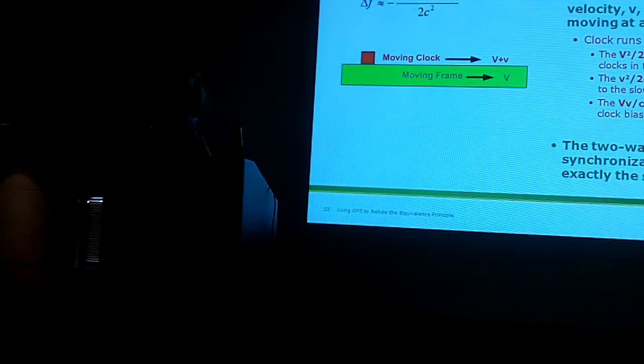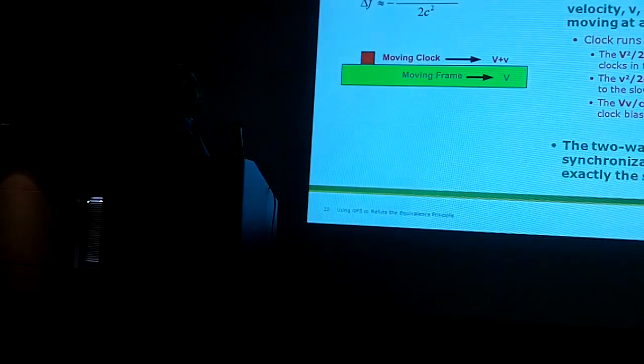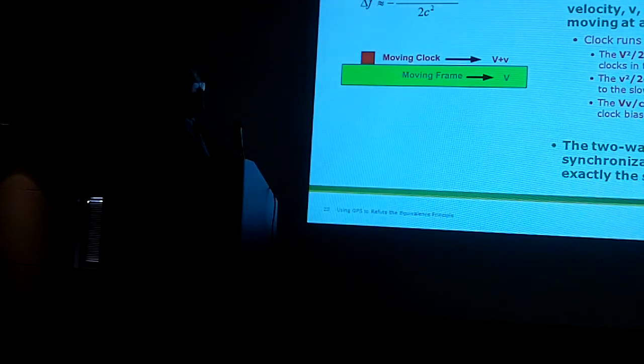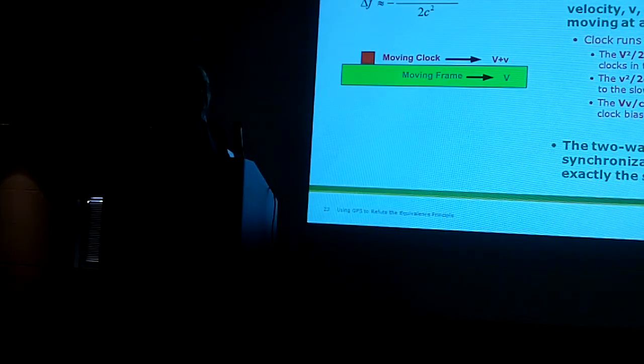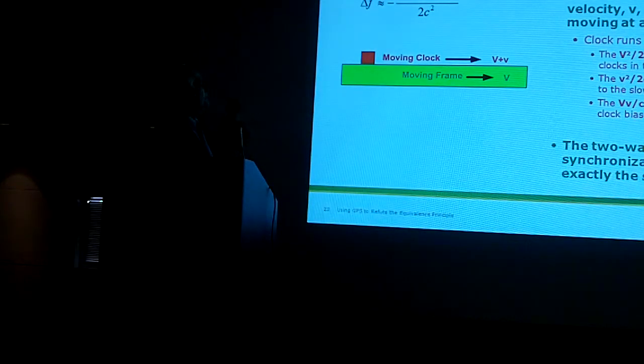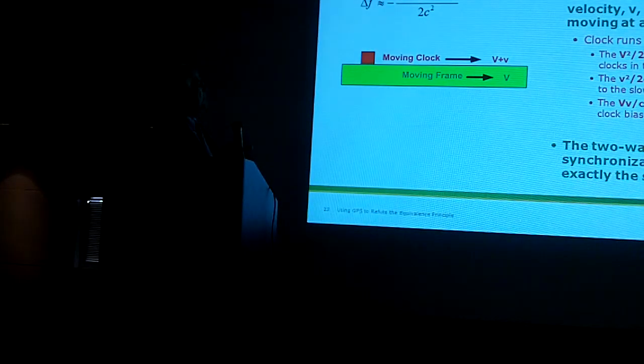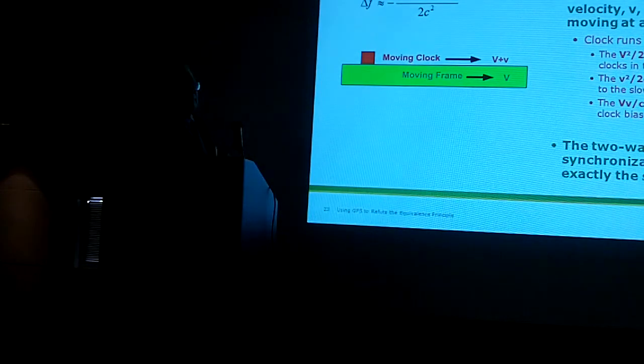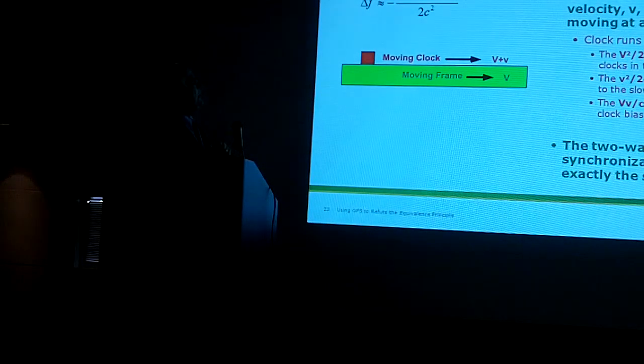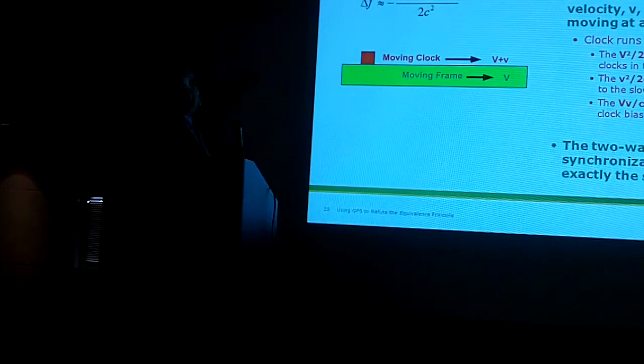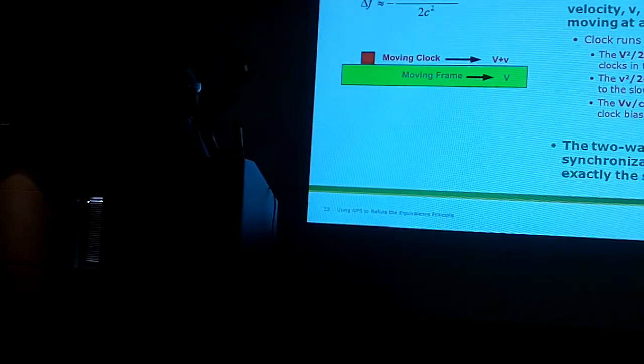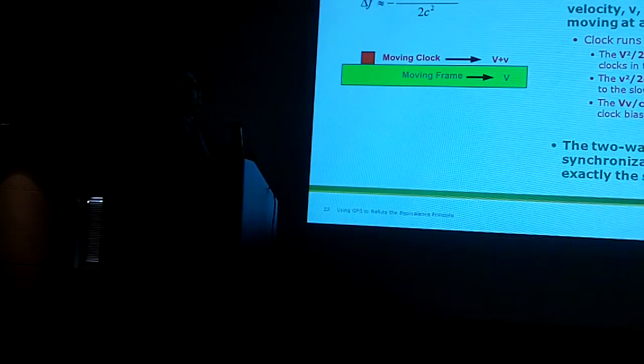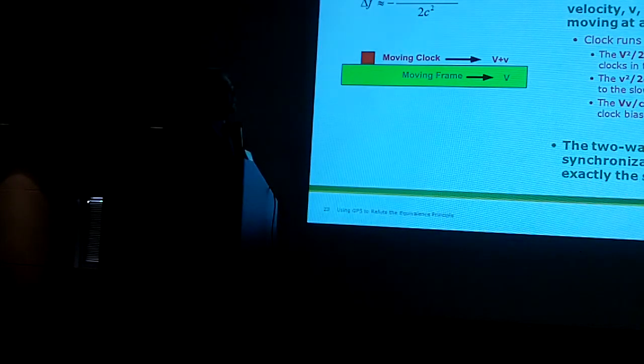A little bit of mathematics to show that, in fact, in some cases, clock biases are generated naturally. And, in fact, here's one. I've got a moving frame V, and I have a clock that's moving in that frame by a small velocity V. And if I look at the frequency effect, incidentally, that delta F should be delta F over F0. It's the fractional change.